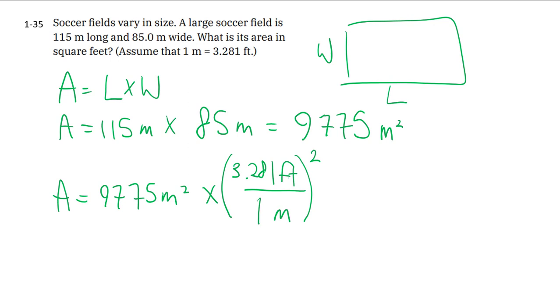That is a good reminder that we don't just deal with this conversion once, we deal with it twice. The 3.281 shows up twice in a sense. You can think of it as we take each of these meters and convert them, so we end up with two factors of the 3.281.